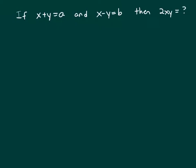We are trying to figure out the value of 2xy, and if you look at your answer selections, all the answers only have a and b in them — no x or y. So let's take these two equations: x plus y equals a, and x minus y equals b, and solve for x and y.